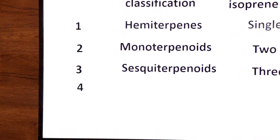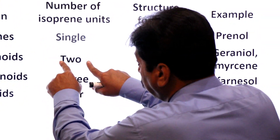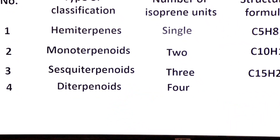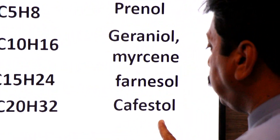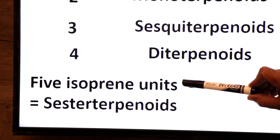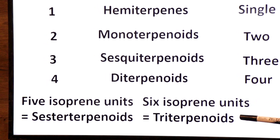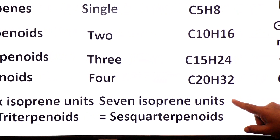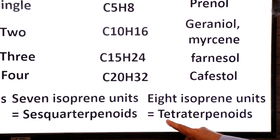Number four: diterpenoids have four isoprene units. If we combine two isoprene units we get a monoterpenoid, and when we join four, we get a diterpenoid with formula C20H32, and an example is cafestol. Higher classifications include triterpenoids (6 units), sesquarterpenoids (7 units), and tetraterpenoids (8 isoprene units).